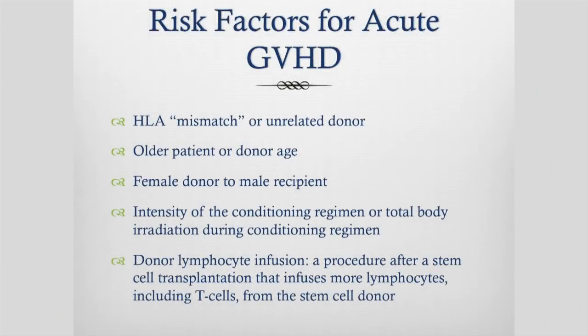There are some risk factors for getting acute graft versus host disease. If there's a mismatch in tissue typing between you and your donor, that can mean you're at more risk of getting GVHD, or if you have an unrelated stem cell donor. If you as a patient are older, or your donor is older, you're more likely to get some acute GVHD. A female donor going into a male recipient is also a risk factor. The intensity of the conditioning regime — that chemotherapy and radiotherapy given prior to the stem cells — can also impact on acute GVHD. If you have a very high myeloablative transplant with high doses of chemotherapy and radiotherapy, there's much more inflammation of your gut and so you're more likely to get some acute graft versus host disease.